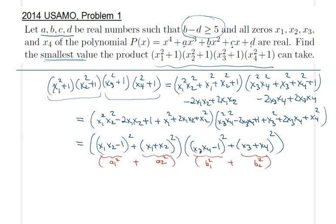Therefore, we can rewrite this so that this expression here is greater than or equal to, if you recall, a₁b₁ plus a₂b₂, obviously squared. So therefore, I claim that this thing is, well, a₁b₁ is just this thing, so (x₁x₂ - 1).